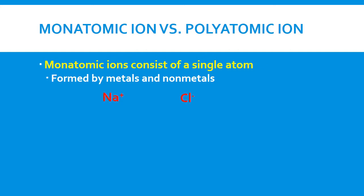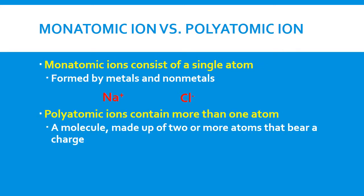For example, we have the ions formed by chlorine and sodium. The one formed by sodium is positively charged and the one formed by chlorine is negatively charged. Polyatomic ions contain more than one atom — it's a molecule made up of two or more atoms that bear a charge. For example, we have SO4²⁻ and Hg2²⁺. Two mercury atoms joined together make up a polyatomic ion because they carry a charge.